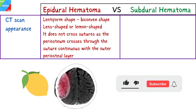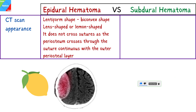When we look at the radiological features, the epidural hematoma appears lentiform, meaning it has a biconvex shape — it can be described as lens-shaped or lemon-shaped. It does not cross sutures, as the periosteum crosses through the suture continuous with the outer periosteal layer.